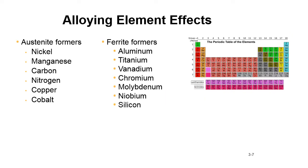Here's a list of alloying elements and their effects. Austenite formers are nickel, manganese, carbon, nitrogen, copper, and cobalt — put these in an iron alloy and they're going to form austenite. Ferrite formers are aluminum, titanium, vanadium, chromium, molybdenum, niobium, and silicon. So depending on the percentage of alloying elements in the alloy, that's going to tell you what you get as far as microstructure — ferritic, austenitic, or martensitic.